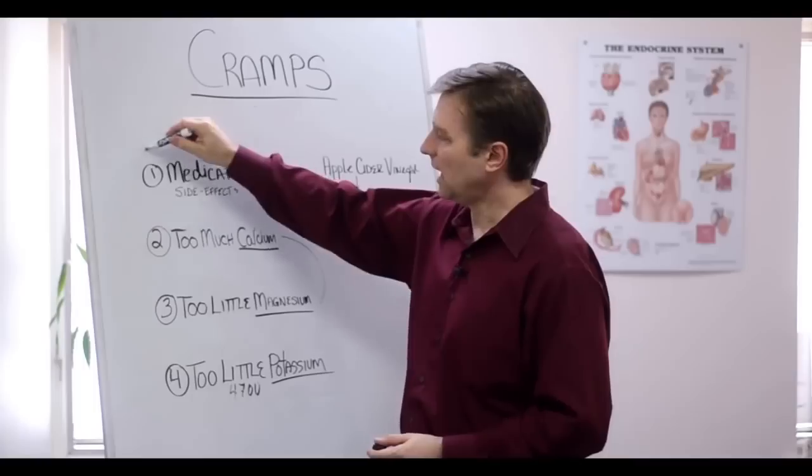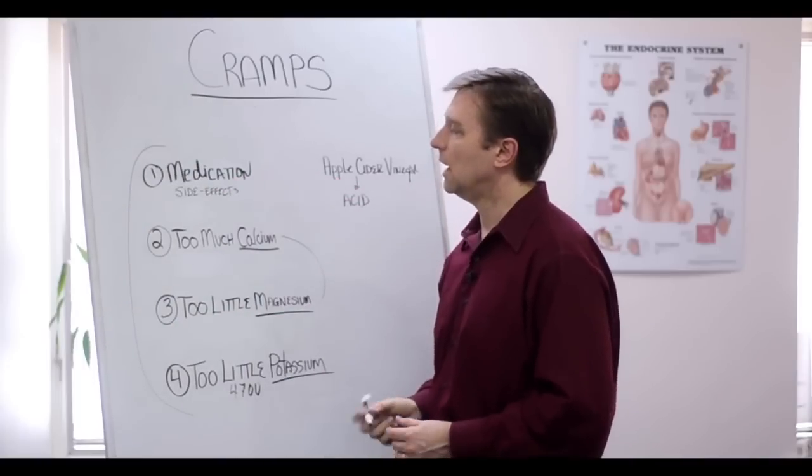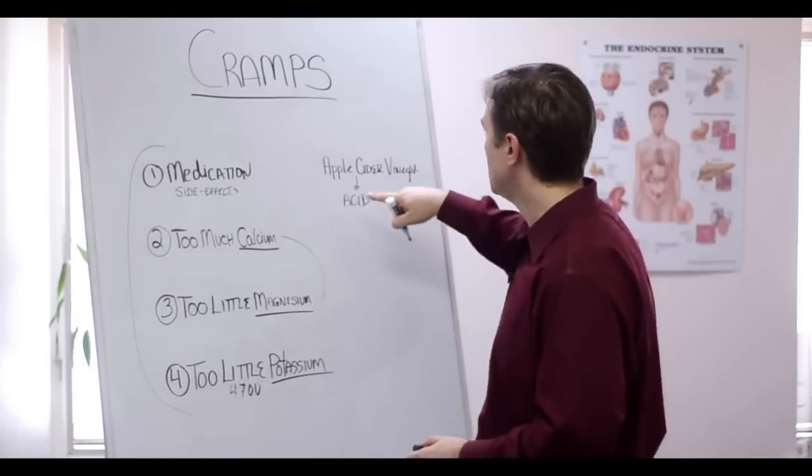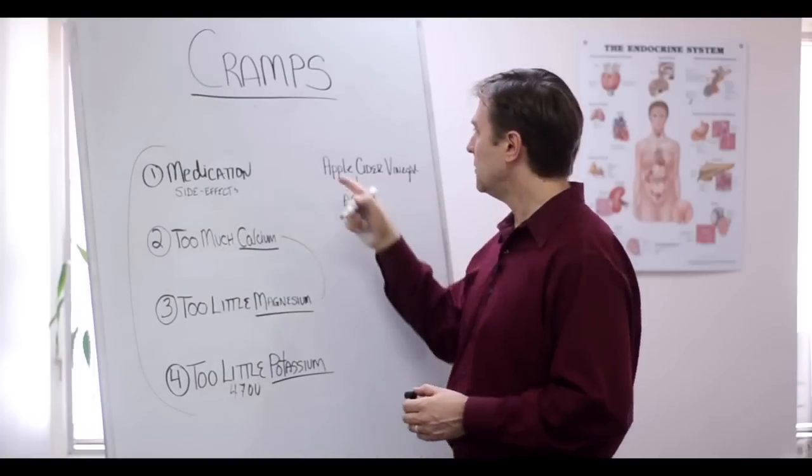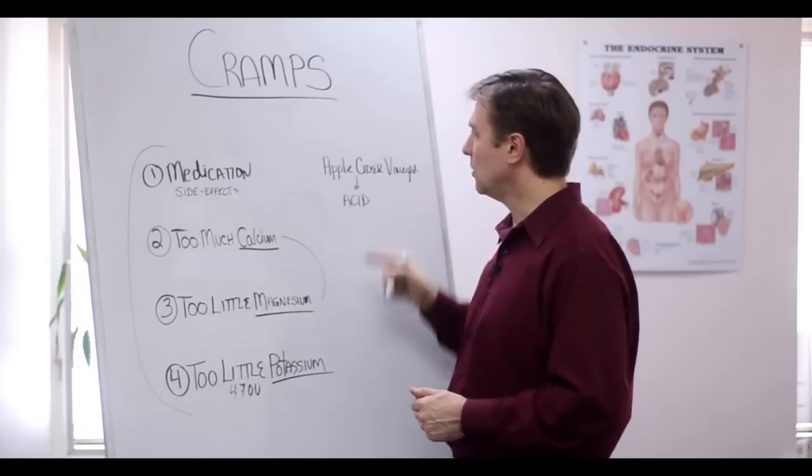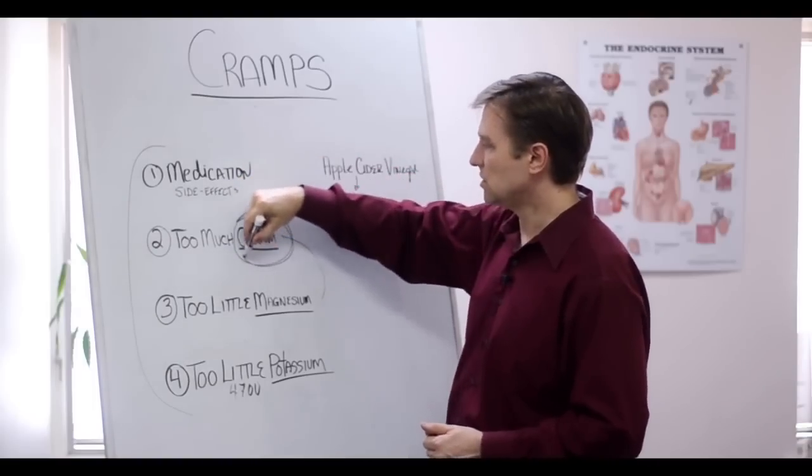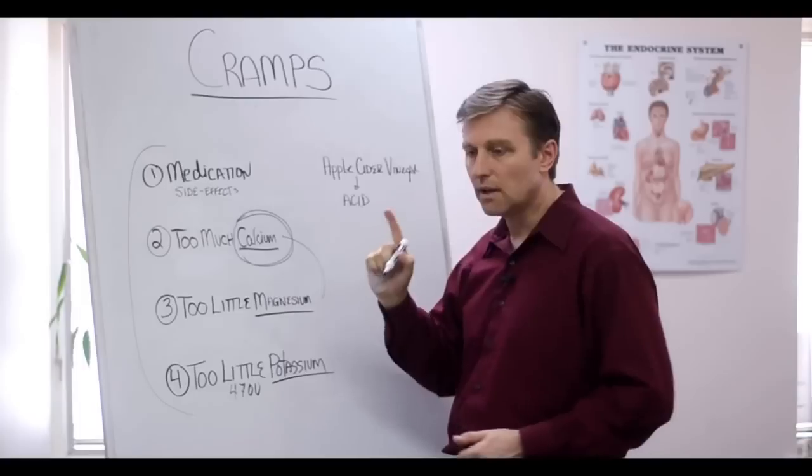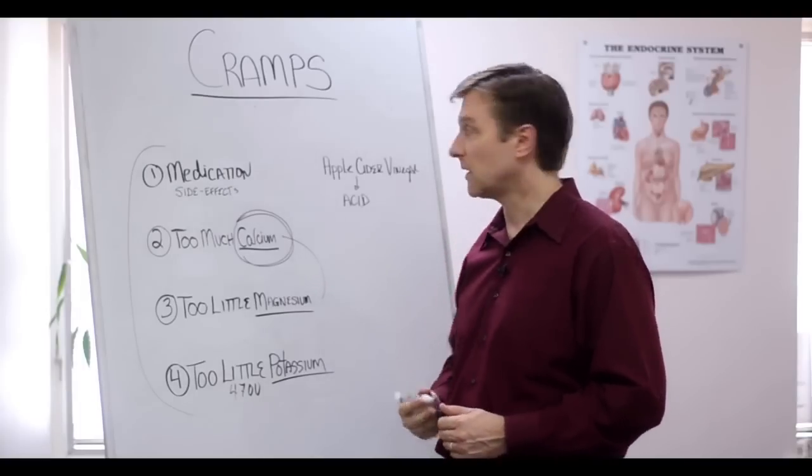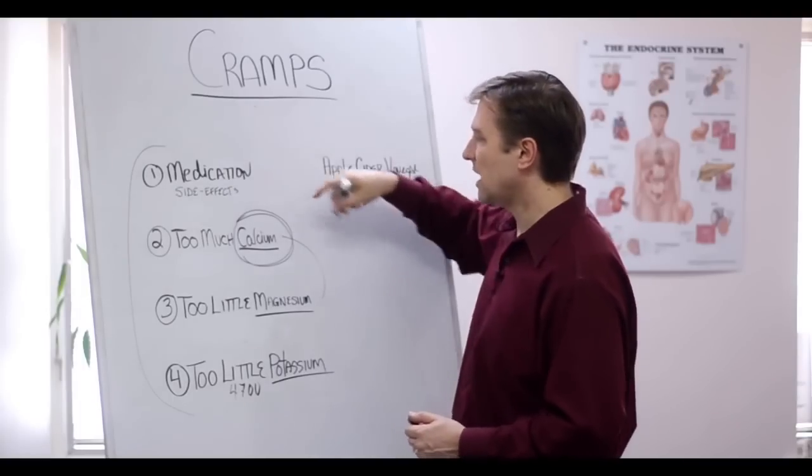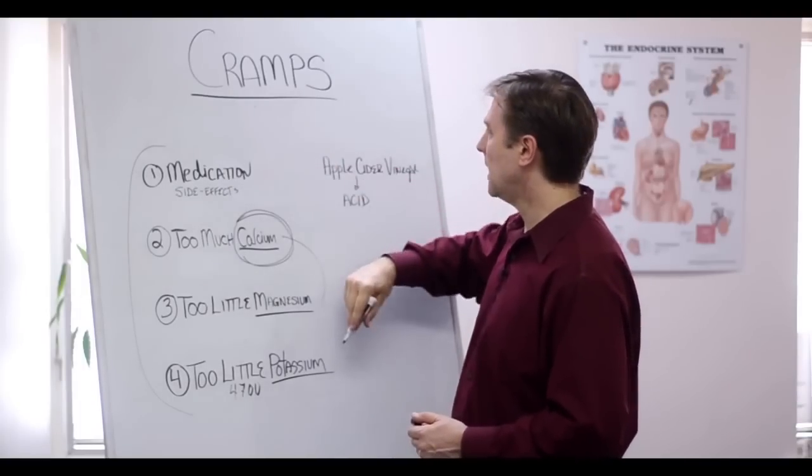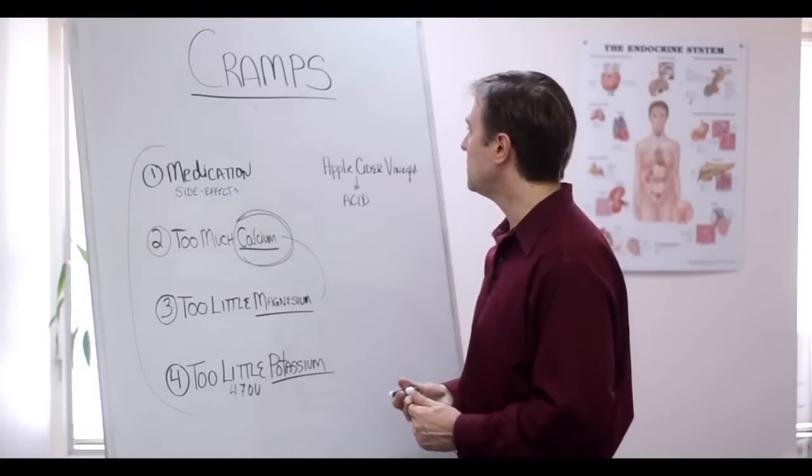But you just want to look at these as a potential cause of your cramps. The other thing is that if you take apple cider vinegar, you'll make the body a little more acidic and you'll really mobilize this calcium into the tissues. So the apple cider vinegar is really good for cramps because it acidifies and it transports a lot of these minerals. And it also helps your stomach absorb the minerals.